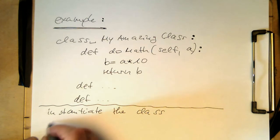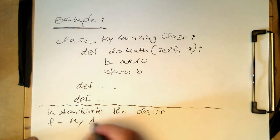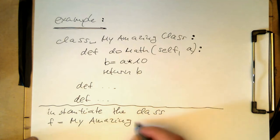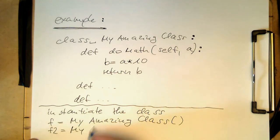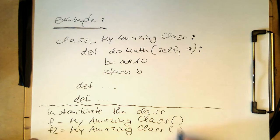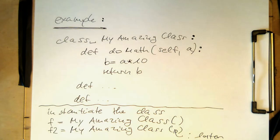So we just write, for example, 'f equals my amazing class'. With that, you are creating an instance of the class. Obviously if you want another instance doing something separate, you could also write 'f2' and do the same again. This doesn't make much sense here because they're doing the same, but we could put something in the constructor argument to make this class different to the other one — we'll do that a bit later.